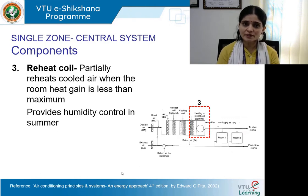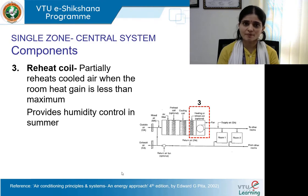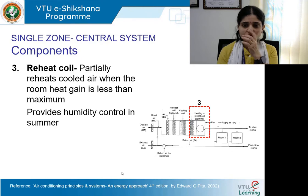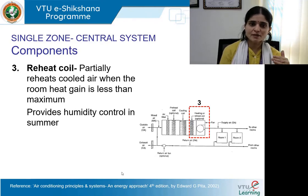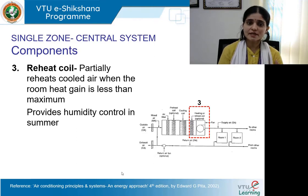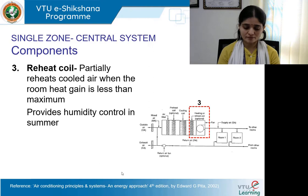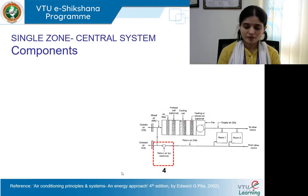Number three: the reheat coil. It partially reheats the cooled air when the room heat gain is less than the maximum. It provides humidity control during summer. This heating or reheat coil can be activated when the thermostat senses that the room heat gain is less than expected or the maximum.